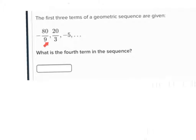And they say, what is the fourth term in the sequence? Now, the hardest part of this is we've got to figure out, what are they multiplying negative 80 over 9 by to get 20 over 3? And what are they multiplying 20 over 3 by to get negative 5?